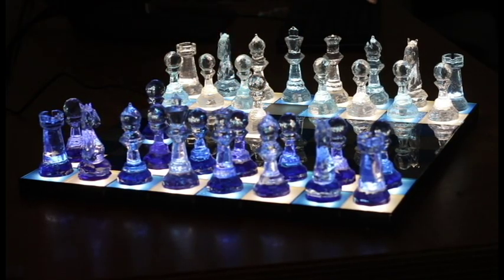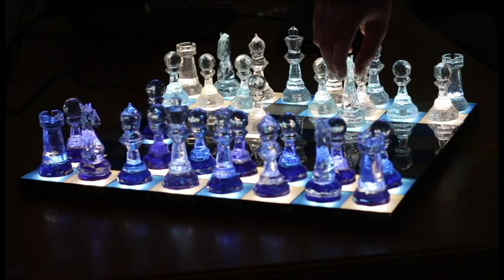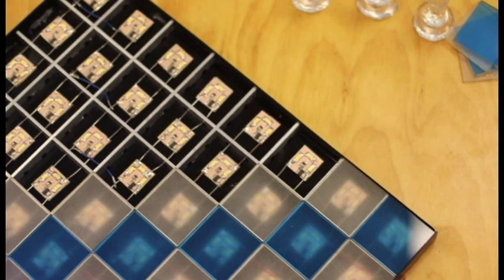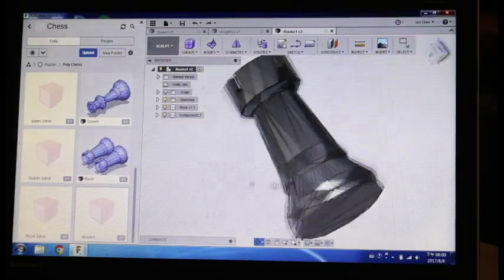The design is that of a chessboard made up of tiles that light up as each piece is moved. The set is composed of three components: the chess pieces, the chess board, and the electronics.